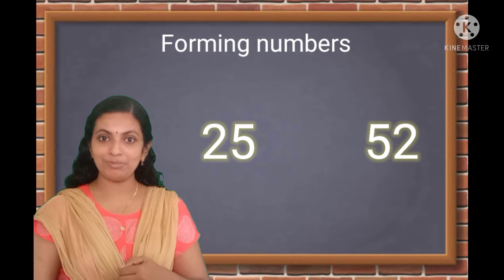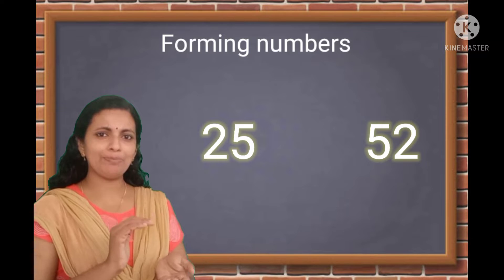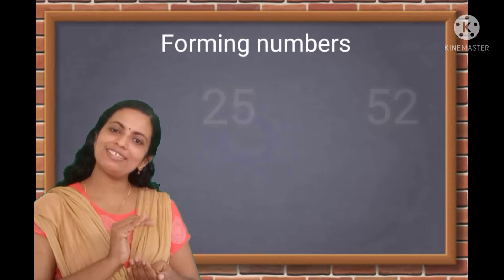And the biggest number? 52. How are the digits arranged? When we kept the smallest digit first, we got the smallest number.